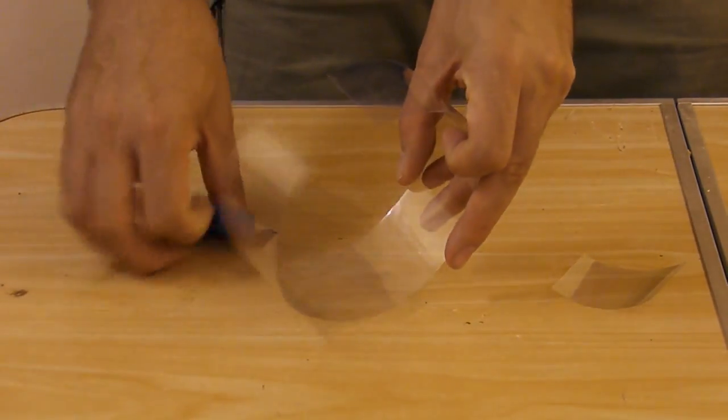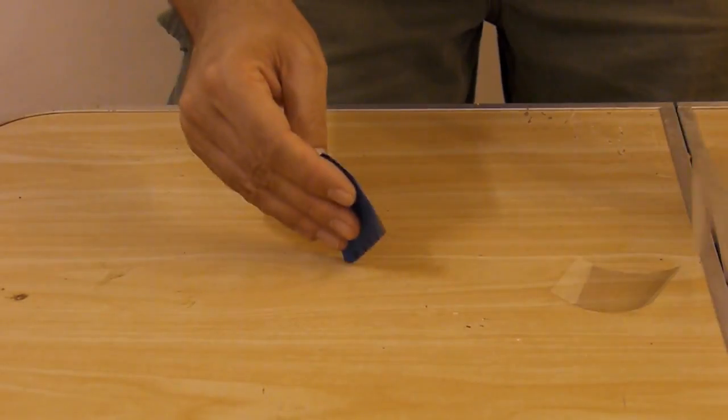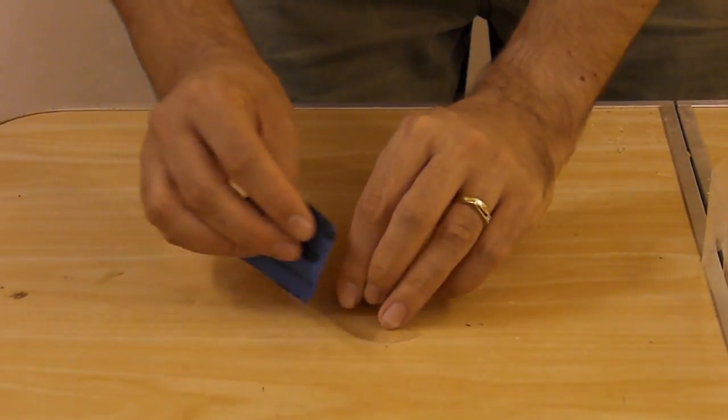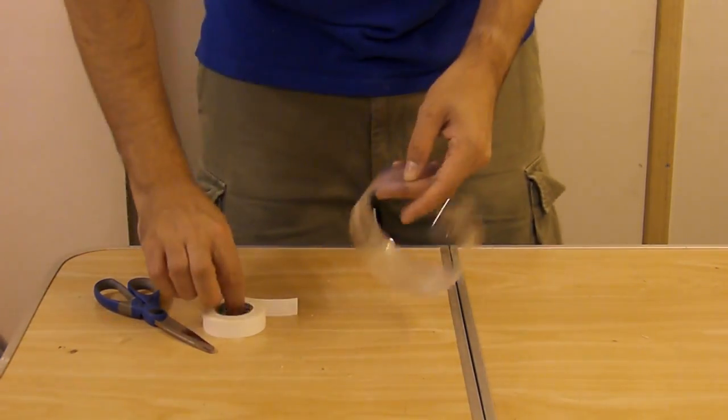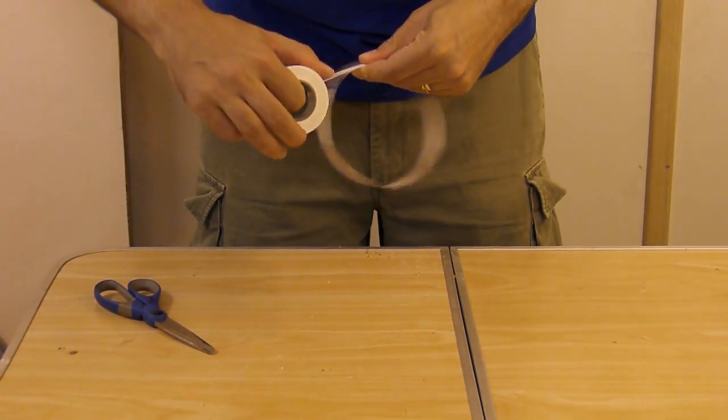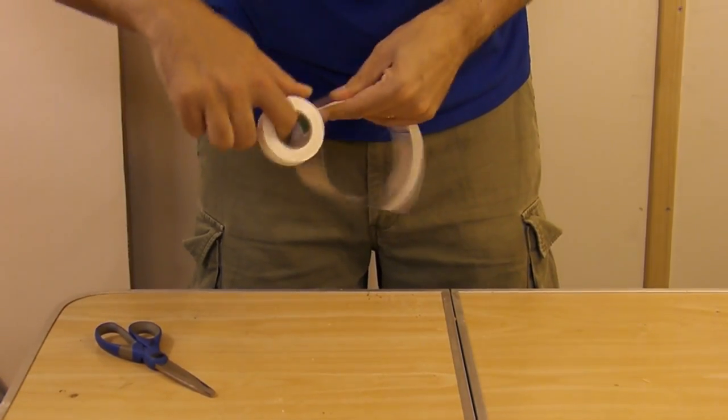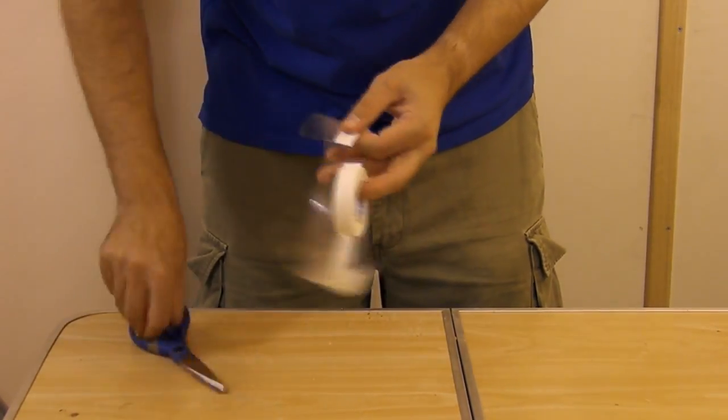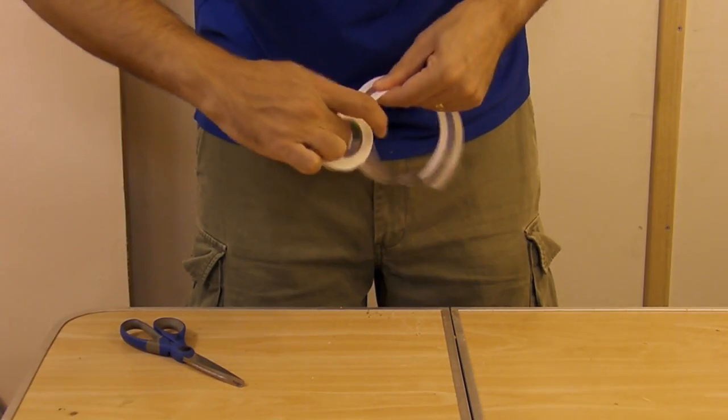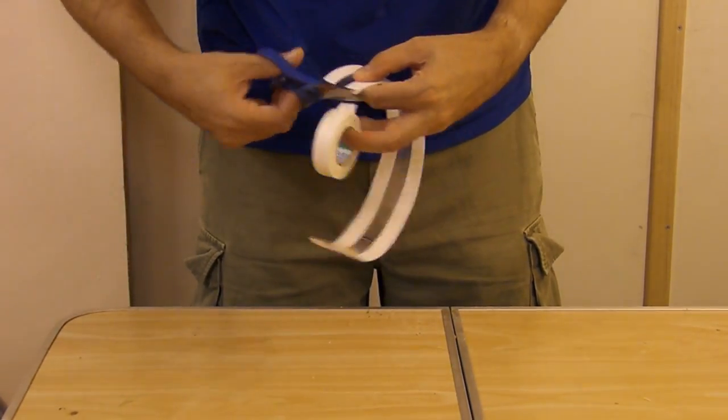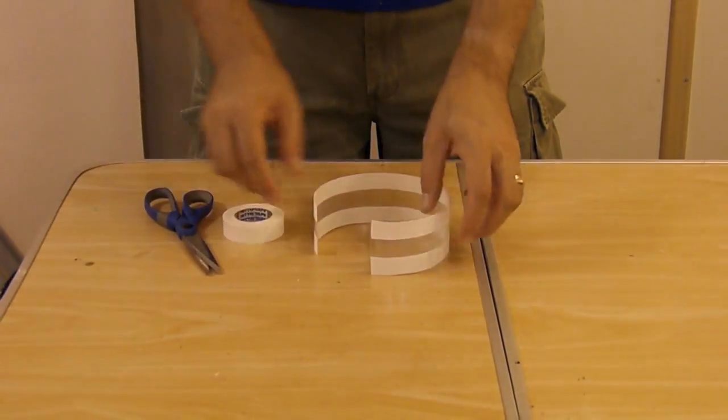Take your sleeve and sand the inside. Then take your little square and sand the inside again. And put some tape right along the edges again. Trim it flush with the end. And then do the same to the other side. And that sleeve is now ready for gluing.